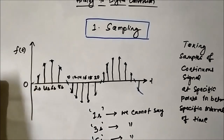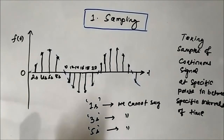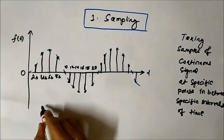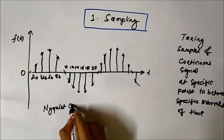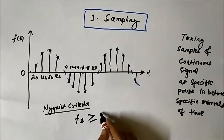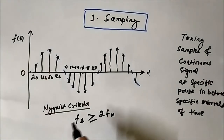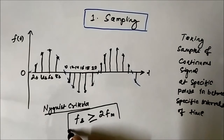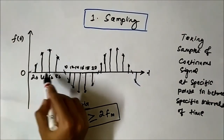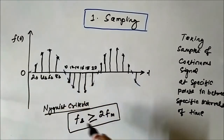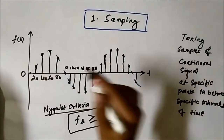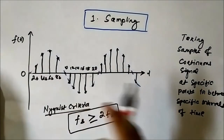How do we make sure that the samples we are taking are sufficient or adequate? This is defined by the Nyquist criteria, or the Nyquist sampling theorem, which states that the sampling frequency must be greater than or equal to twice the maximum signal frequency in order to accurately reconstruct the signal from its samples.